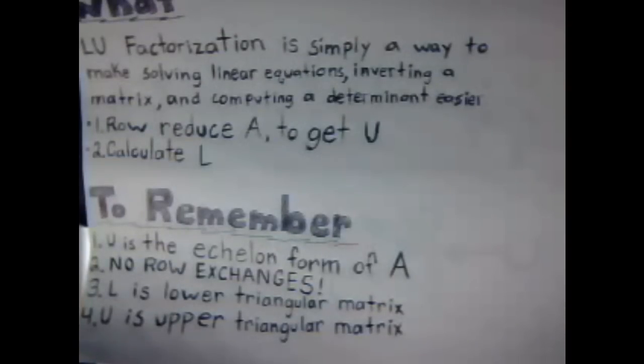Also know that L is going to be a lower triangular matrix. Just think of L, lower. We'll start with L. And U is upper. See, it's pretty easy. It's an upper triangular matrix. If you don't know what one of those looks like, just understand that a lower triangular matrix, everything above the diagonal is going to be all zeros. And with an upper, it's the opposite. Everything below the diagonal is going to be zeros.